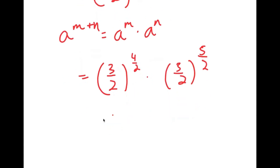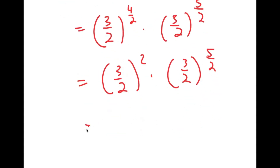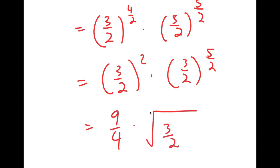Since 4/2 equals 2, I get (3/2) squared times (3/2) to the power of 5/2. And (3/2) squared equals 9/4, so I get 9/4 times (3/2) to the power of 5/2, which is the same thing as the square root of (3/2) to the power of 5.